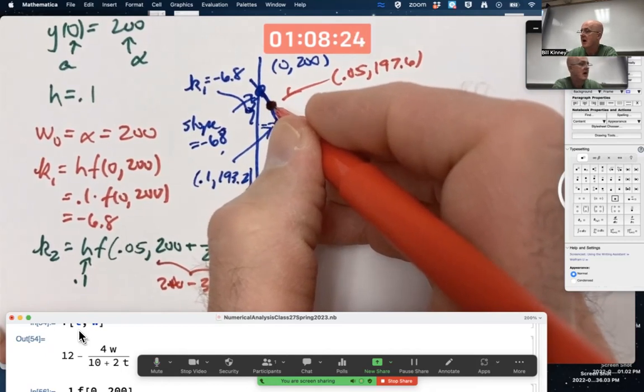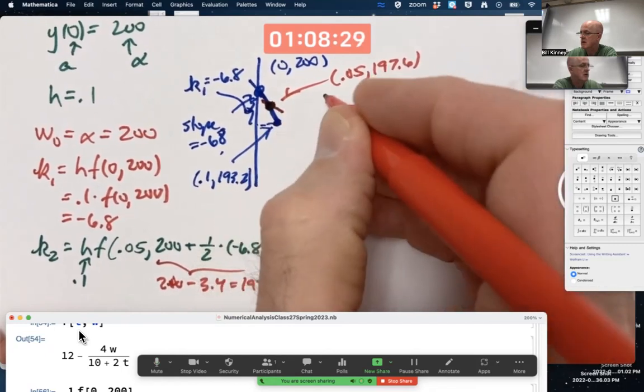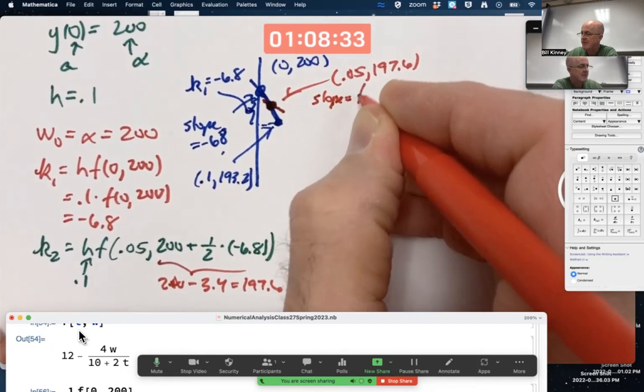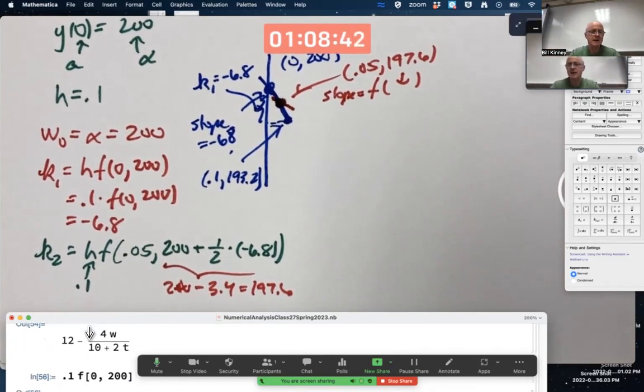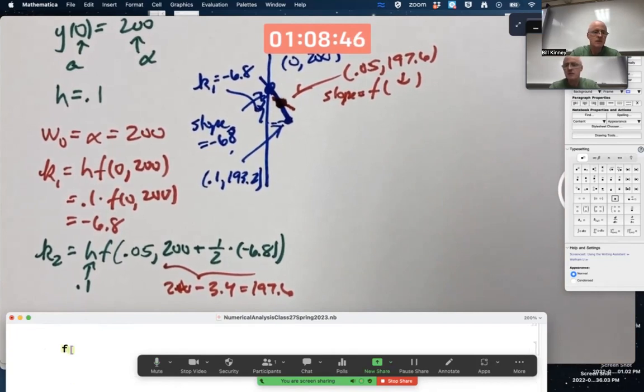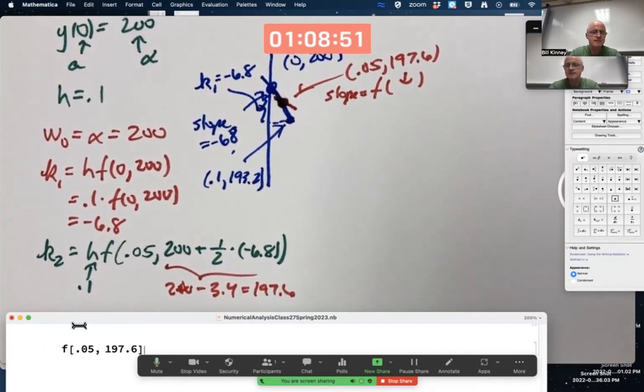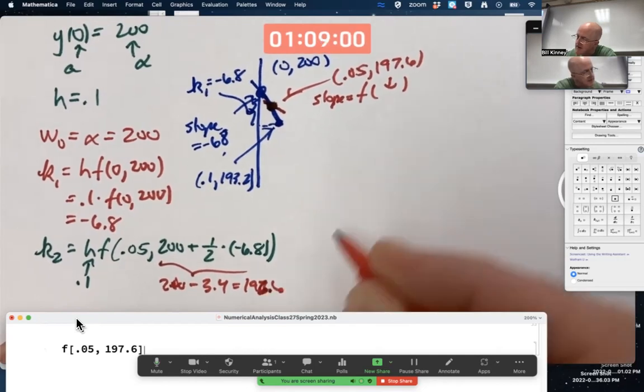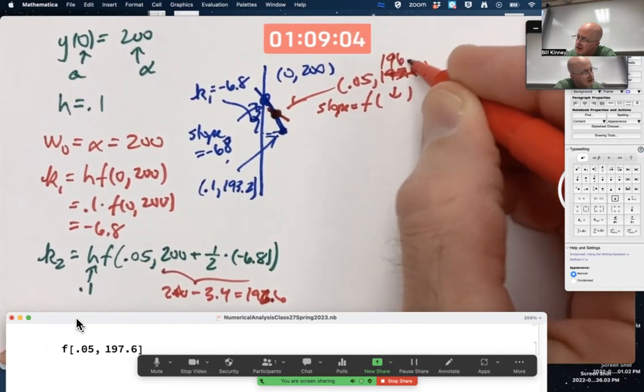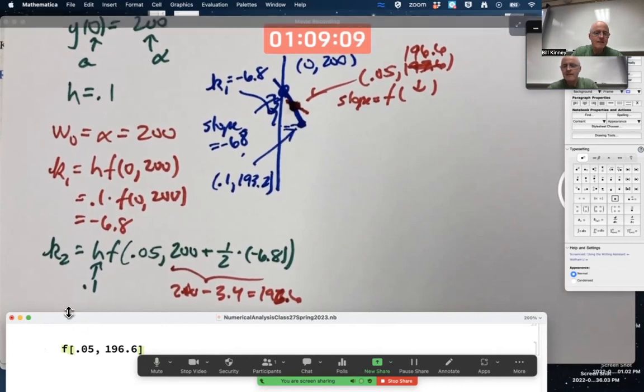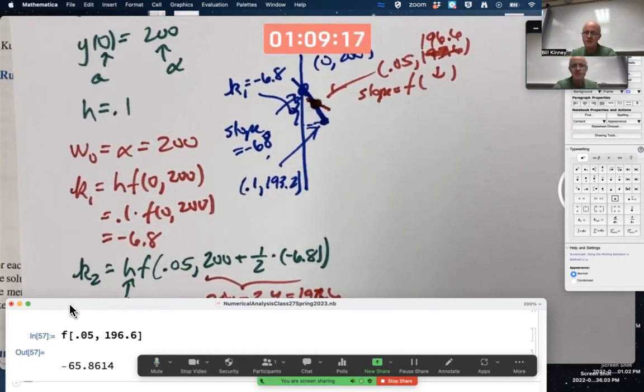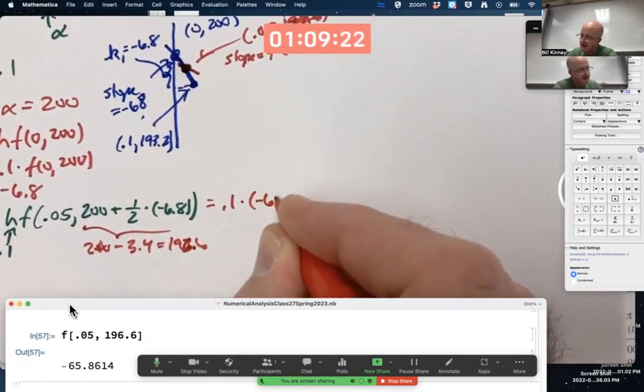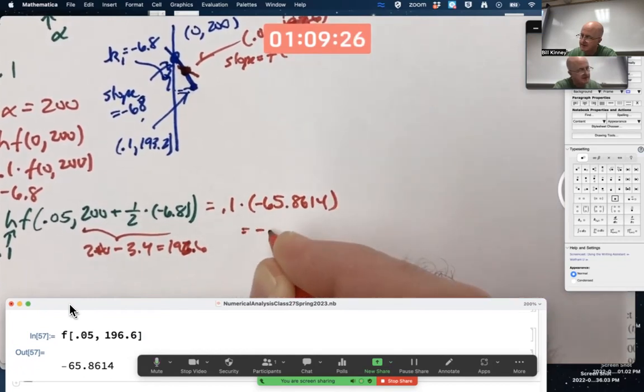What's the slope there? I'm guessing it's a little bit bigger, a little closer to 0. Slope equals F of this thing. It's still negative, I imagine, but a little closer to 0. Let's go ahead and see what it is. F of (0.05, 196.6). Negative 65.8614.